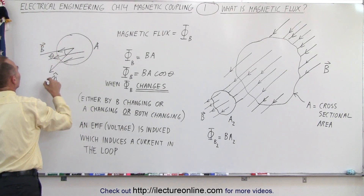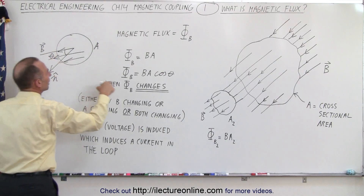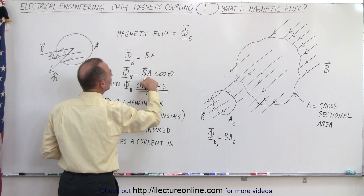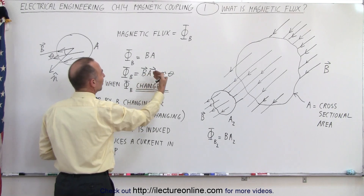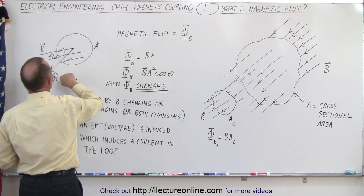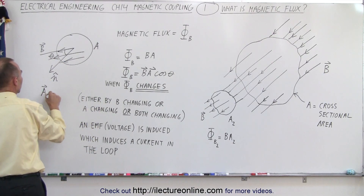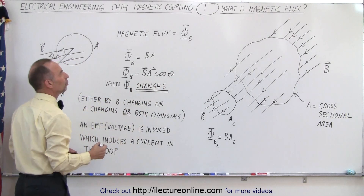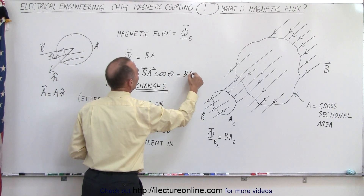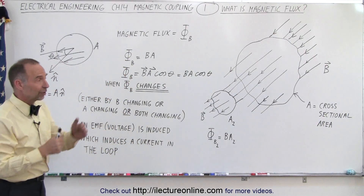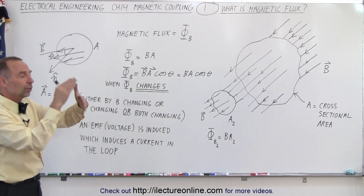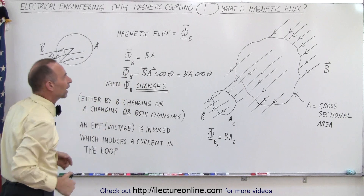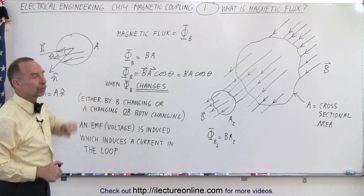So if N is the normal and B is the field, the flux can be written as the product of the B field direction and the area vector A. A as a vector quantity is simply the magnitude of A times the direction of the normal vector, so the flux equals B times A times the cosine of theta. If the magnetic field is not perpendicular to the cross-sectional area of the loop and is at an angle, we have to take into account the cosine of theta to calculate the magnetic flux through the loop.